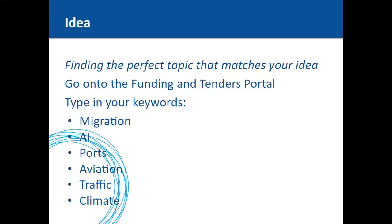Horizon 2020 covers a huge range of topics. As an example, keywords such as migration, AI, ports, aviation, traffic, and climate can be entered into the Funding and Tenders Portal. Searching with the keyword 'AI' and filtering for open opportunities returns 75 results — the first being on medical technologies, digital tools, and AI analytics to improve surveillance and care at high technology readiness levels.